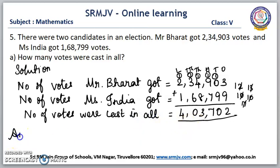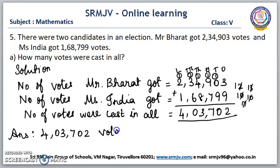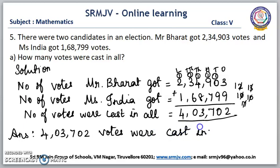Now we have to write the answer. 4,03,702 votes were cast in all. Is it clear, children? Shall we go to the next one?